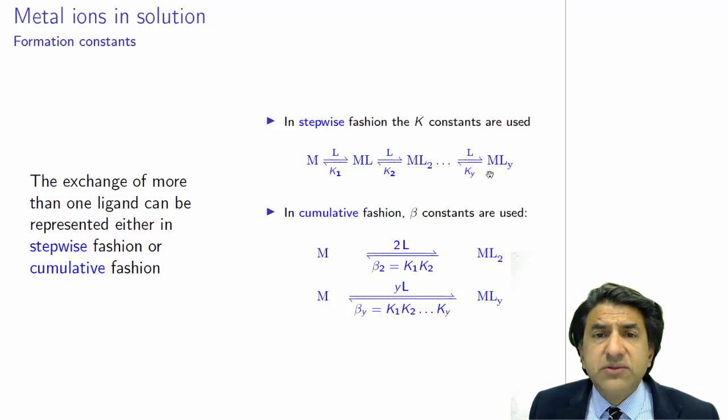But that's not normally the way we write metal formation constants. We normally use the symbol beta, and we write it cumulative. So if we write these equations cumulatively, we have metal plus 2 ligands goes to ML2. And that has a constant beta2, beta for 2 ligands.